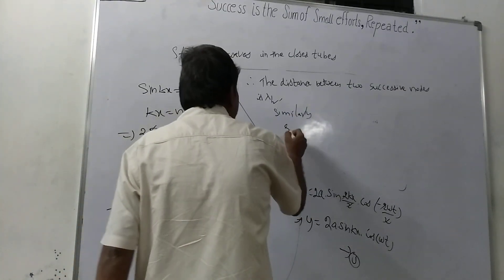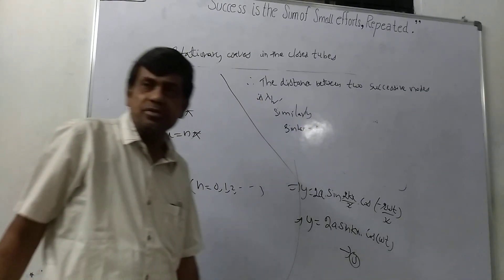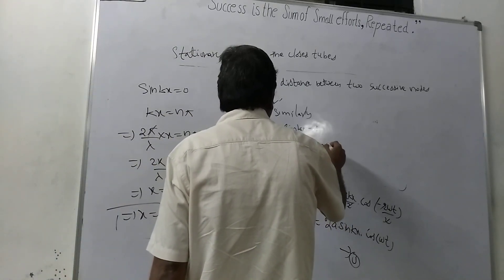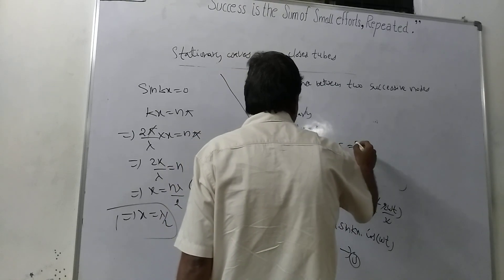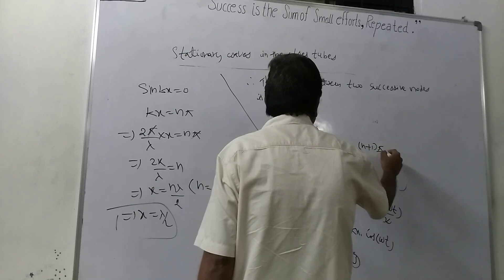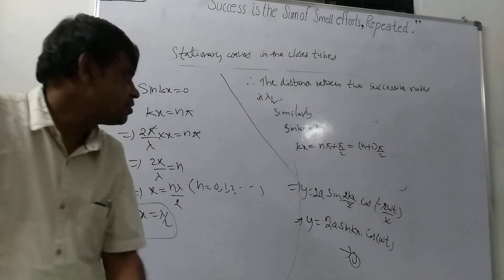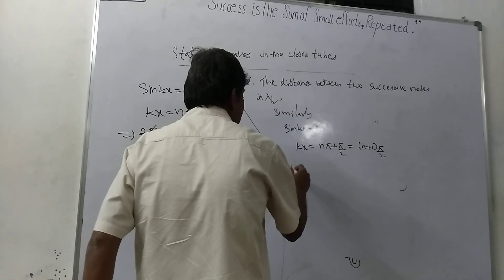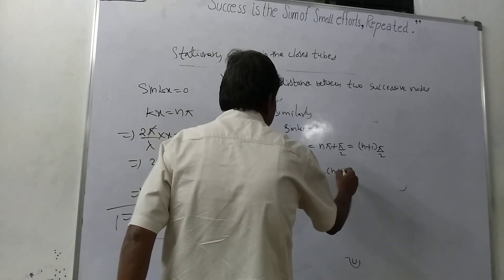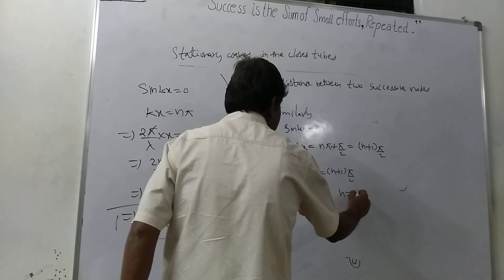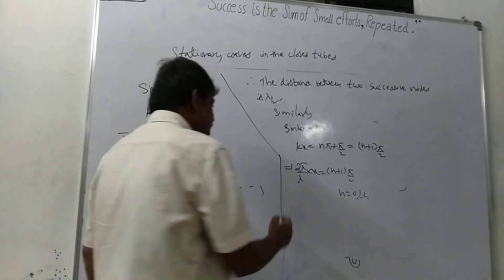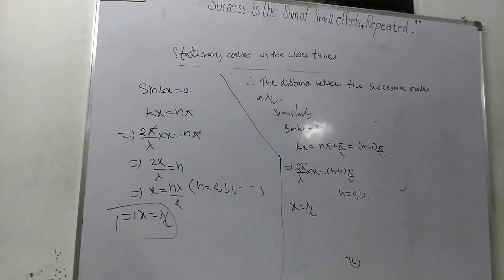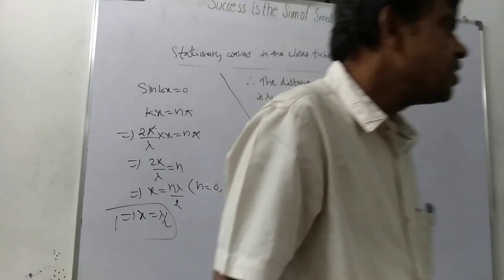Similarly, if sin(kx) equals 1, we are getting maximum amplitude — that is the antinode condition. Here kx equals n pi plus pi by 2, which is (2n+1) pi by 2. Since k equals 2pi by lambda, substituting: 2pi by lambda into x equals (2n+1) pi by 2, giving the distance between two successive antinodes as lambda by 2.